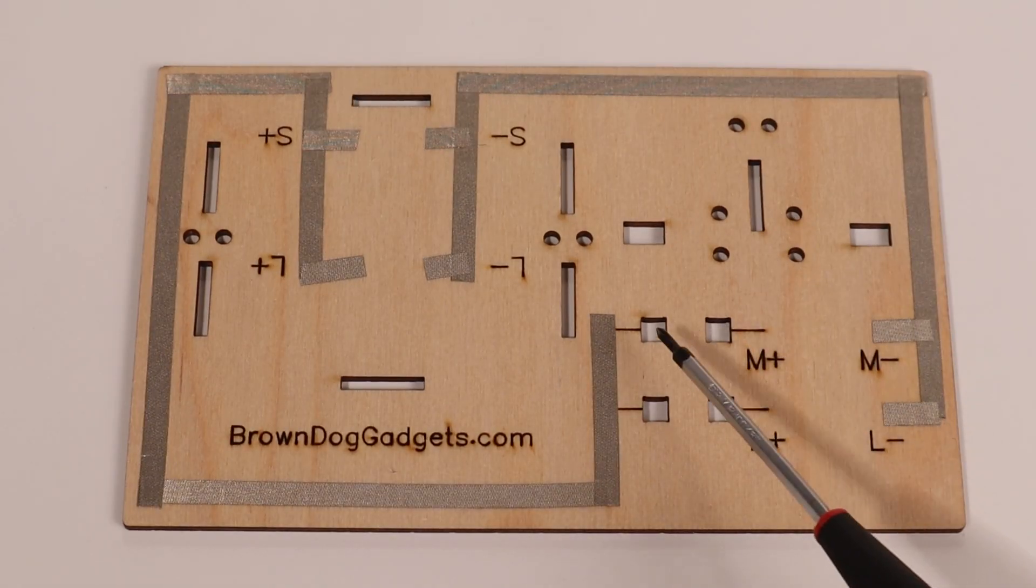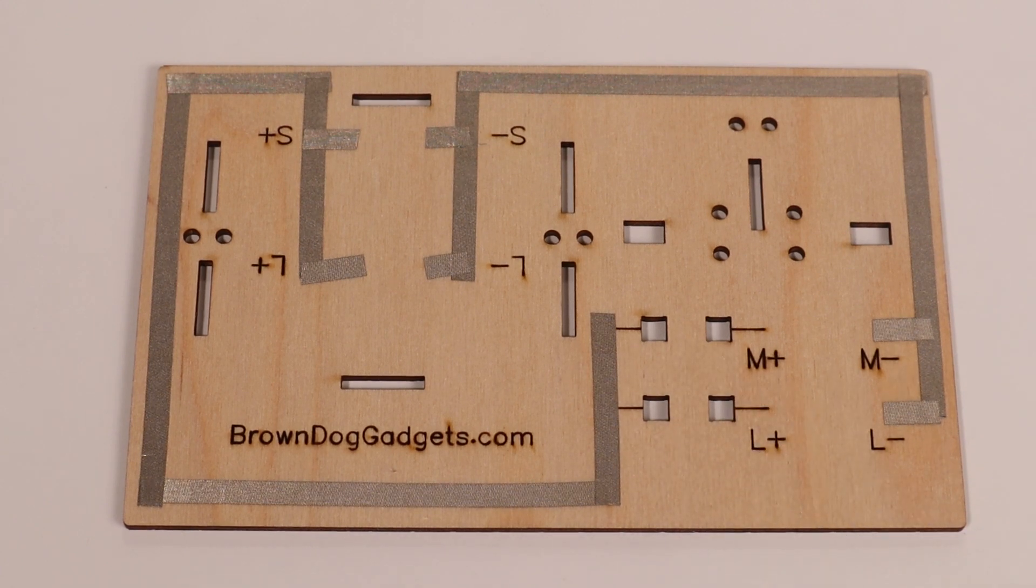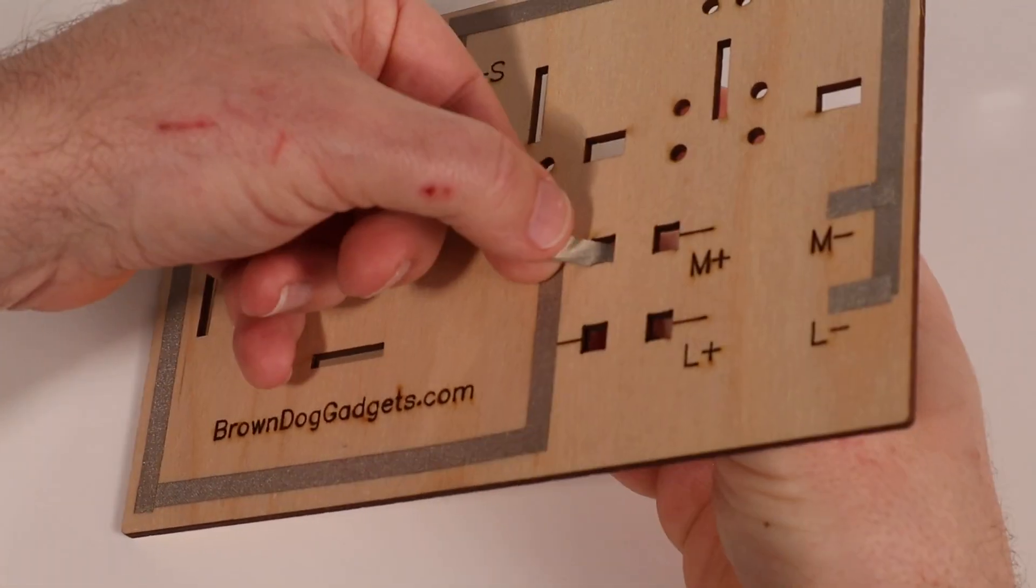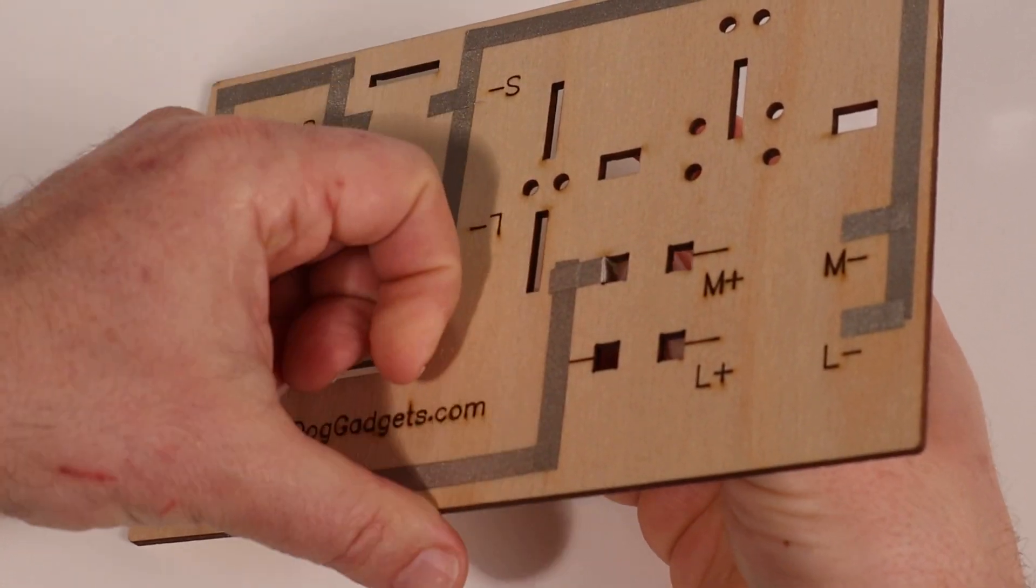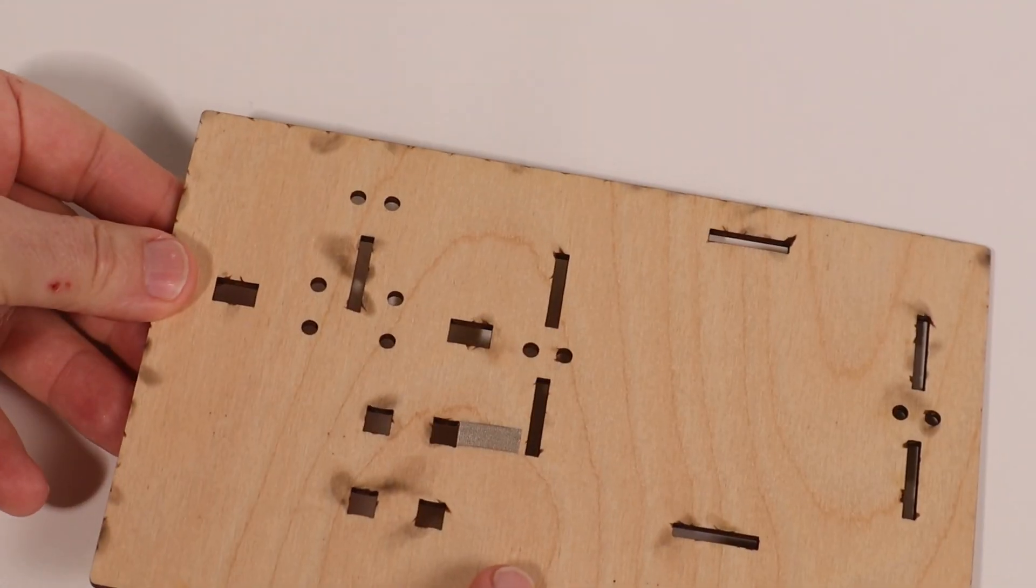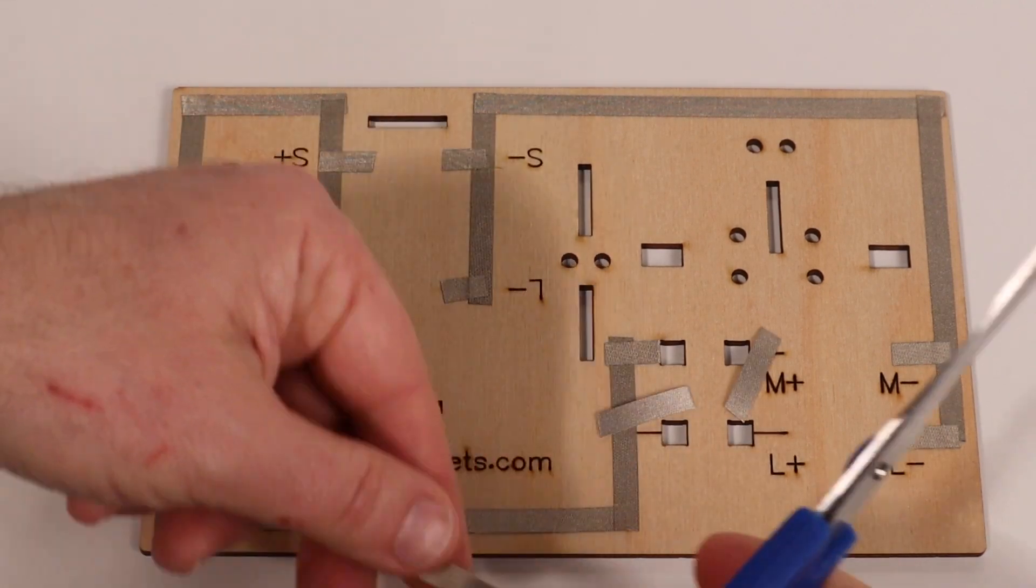There are four square holes in the base that you'll need to push Maker Tape through. Cut a piece of tape to length, push it through the hole, and wrap the tape around to the back side of the base. Repeat this with the other three holes.